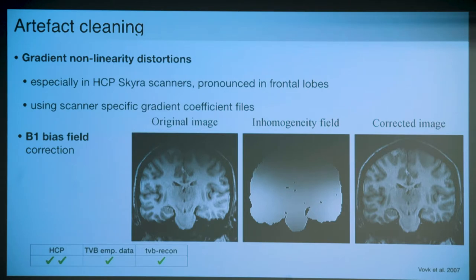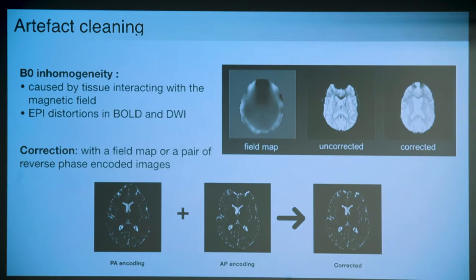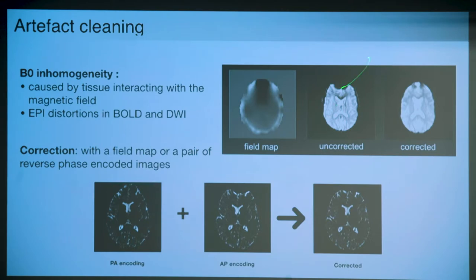Another important step in fMRI and diffusion weighted imaging is correcting for spatial distortions caused by the interaction of the static magnetic field with tissue properties - very pronounced in frontal and temporal regions. The tissue itself interacts with the magnetic field causing stretching or compression in different areas. You can estimate these distortions with a field map and then un-stretch or uncompress the fMRI image. This is also very important in diffusion weighted imaging.